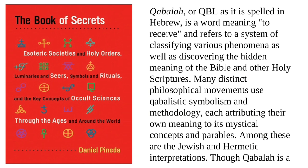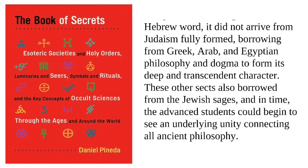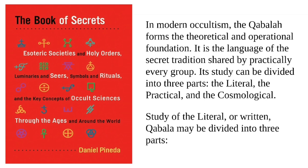Among these are the Jewish and Hermetic interpretations. Though Kabbalah is a Hebrew word, it did not arrive from Judaism fully formed, borrowing from Greek, Arab, and Egyptian philosophy and dogma to form its deep and transcendent character. These sects also borrowed from the Jewish sages, and in time the advanced students could begin to see an underlying unity connecting all ancient philosophy. In modern occultism, the Kabbalah forms the theoretical and operational foundation. It is the language of the secret tradition shared by practically every group.